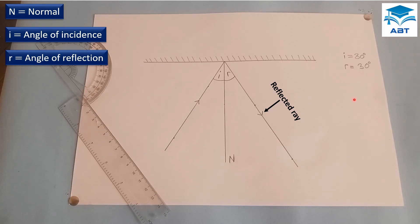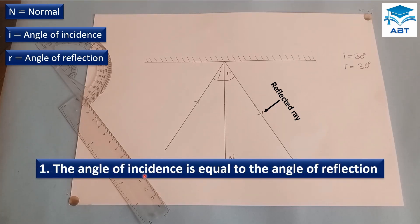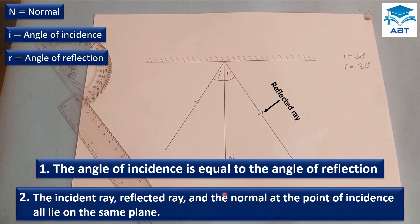And as we can see, the angle of incidence is 30 degrees and the angle of reflection is also 30 degrees. And this brings us to the laws of reflection. The angle of incidence is equal to the angle of reflection. And also, the incident ray, the reflected ray, and the normal at the point of incidence all lie on the same plane. These are the two laws of reflection.